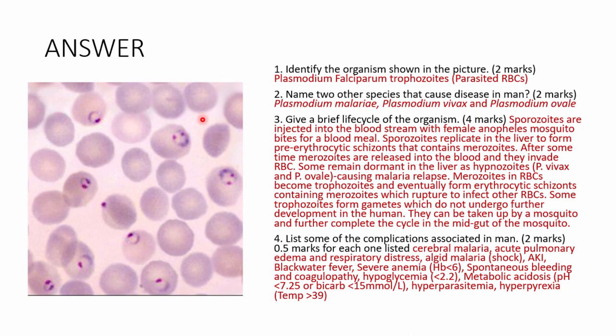Some merozoites develop into macro- and microgametes instead of trophozoites. These gametes do not develop further in humans, as the human is the intermediate host — the mosquito is the definitive host. When a mosquito bites, gametes are taken up, fuse in the midgut to form a zygote, which becomes an ookinete, then an oocyst containing sporozoites that migrate to the salivary gland, completing the cycle.